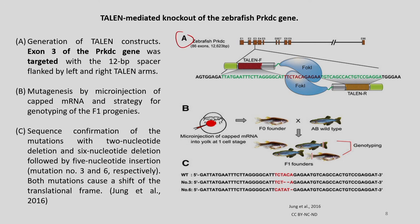In step A, exon 3 of the PRKDC gene was targeted with a 12 base pair spacer flanked by left and right TALEN arms. Step B involved mutagenesis by microinjection of capped mRNA and a strategy for genotyping of the F1 progeny. In step C, sequence confirmation of the mutations showed two nucleotide deletions and six nucleotide deletions followed by a five nucleotide insertion — both mutations cause a shift of the translational frame.